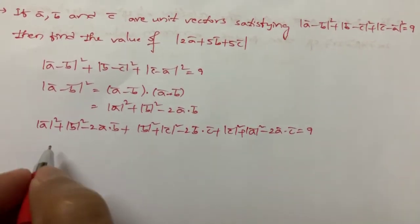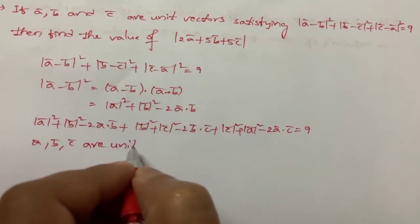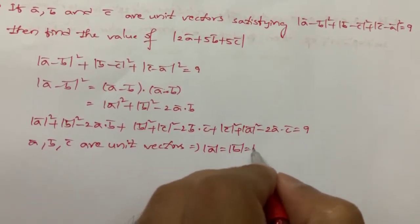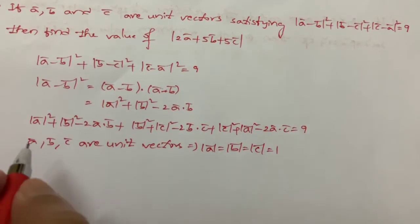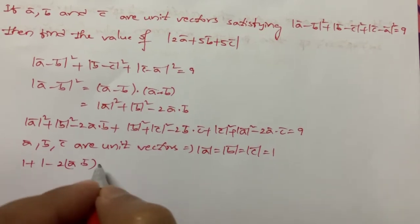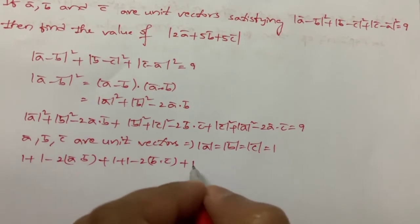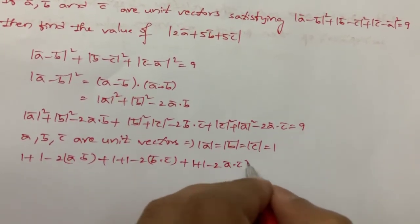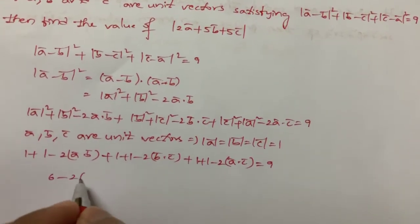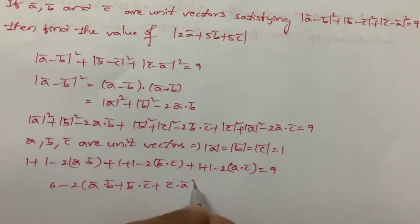Since a-bar, b-bar, c-bar are unit vectors, the magnitude of each is 1. Substituting, we get 1 + 1 - 2(a·b) + 1 + 1 - 2(b·c) + 1 + 1 - 2(a·c) = 9. This simplifies to 6 - 2(a·b + b·c + c·a) = 9.